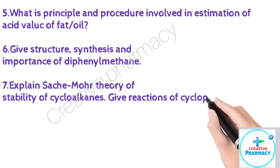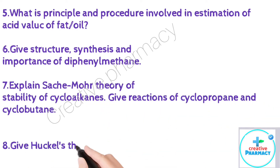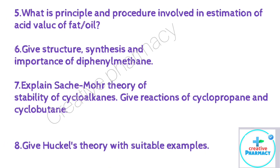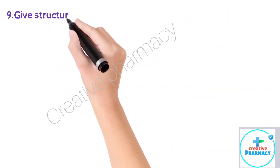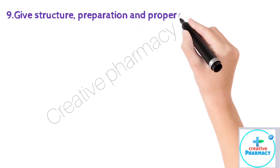Question 7: Explain Baeyer's strain theory of stability of cycloalkanes. Give reactions of cyclopropane and cyclobutane. Question 8: Give Huckel's theory with suitable examples.